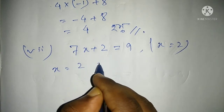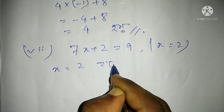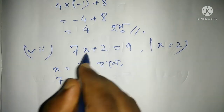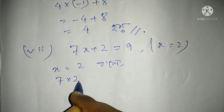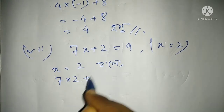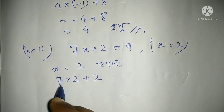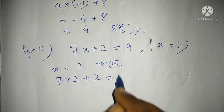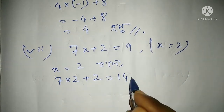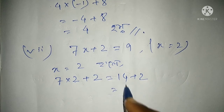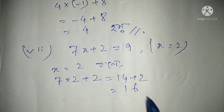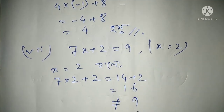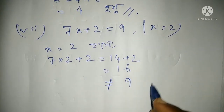x equal to 2. So 7 into 2, writing 2. 7 into 2 plus 2 — what value do we get? Searching: 7 into 2 is 14, plus 2 equals 16. But that is not equal to 9. We do not get 9. So what do we write here? It is not correct.